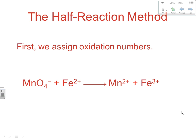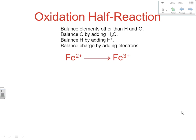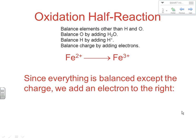First we assign oxidation numbers so we can split into the correct oxidation and reduction half-reactions. For MnO4-, oxygen is always negative 2, so the O is -2, which means Mn must be +7, because +7 plus -8 equals -1, matching the charge of MnO4-. Manganese goes from +7 to +2, so it's being reduced — that's the reduction half-reaction. Iron goes from +2 to +3, so that's being oxidized.